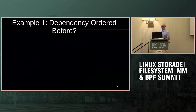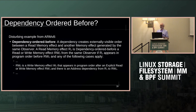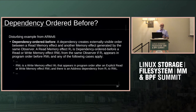You may have caught 'dependency ordered before' as it went by on screen. Let me read this: a dependency creates an externally visible order between a read memory effect and another memory effect generated by the same observer — same CPU. A read R1 is dependency ordered before RW2 if R1 appears in program order before RW2 and any of the following apply. One case got my attention: RW2 is a write W2 that appears in program order after an explicit read or write RW3, and there's an address dependency from R1 to R3.